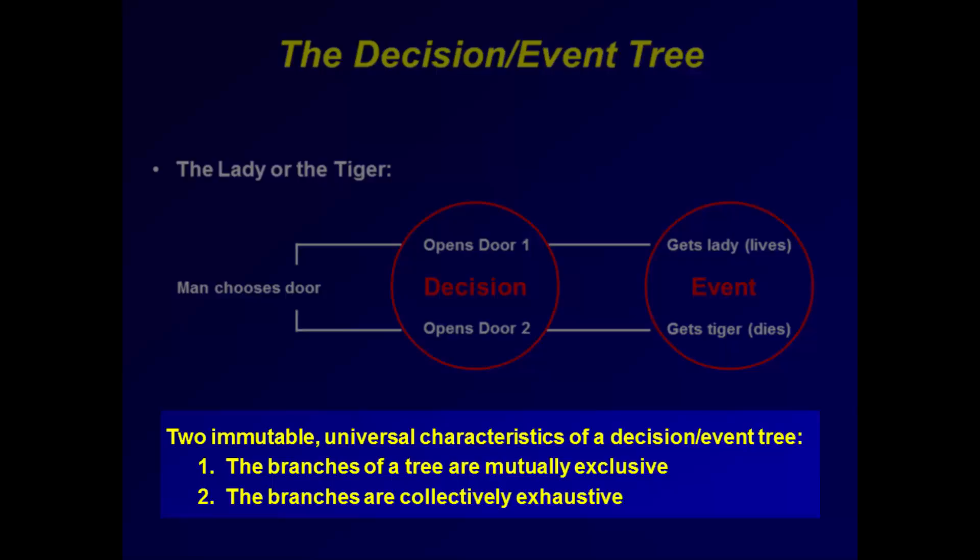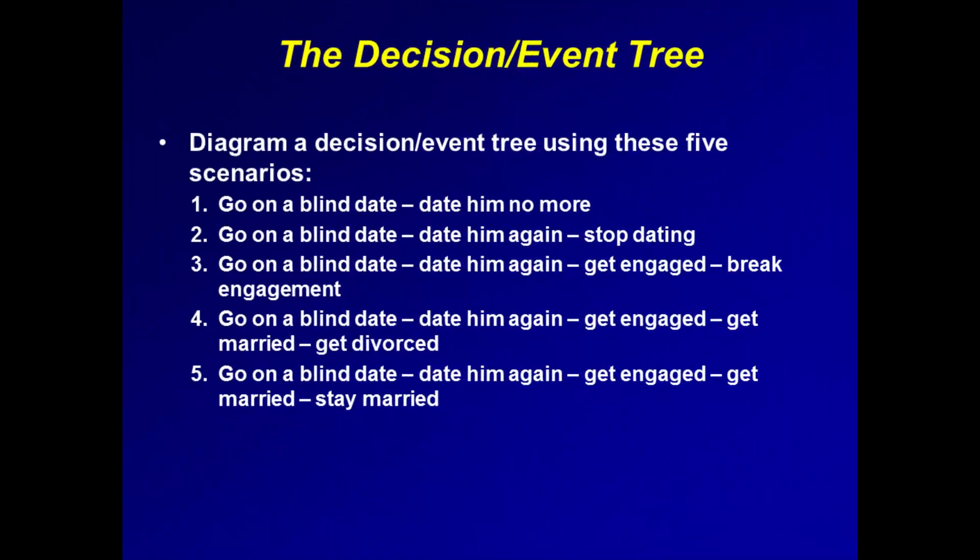There is no third door in this scenario. And there is only one consequence for choosing a door — you don't get anything else but the tiger, and ultimately death, if you choose door two. Let's use the principles involved in constructing and using a decision event tree by examining another example.